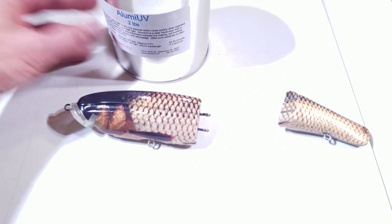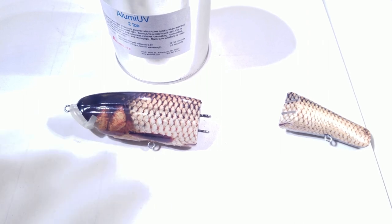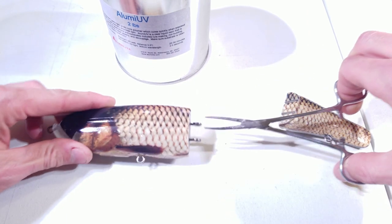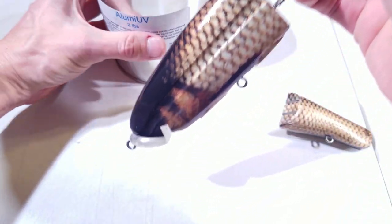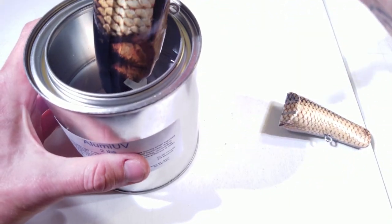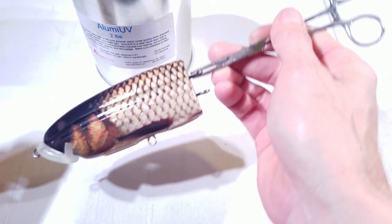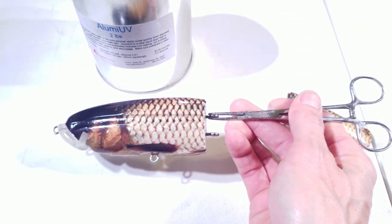Next step is clear coating. I like to use some vice grips or some forceps to clamp on the screw eye on the end of the Deps front head, dipping it completely in the Aluma UV, letting it drip back into the can, and then curing it under some UV lights or under the sun.